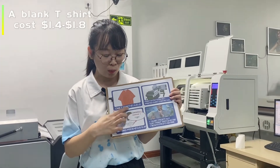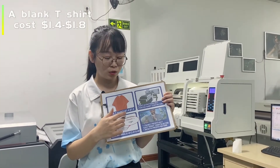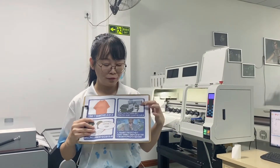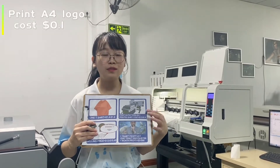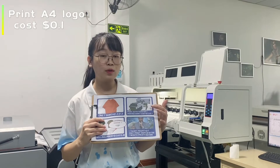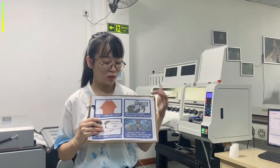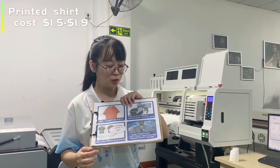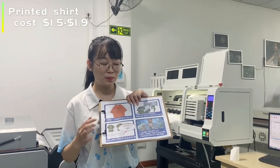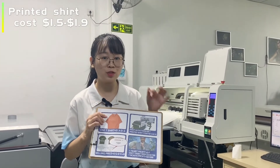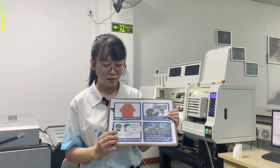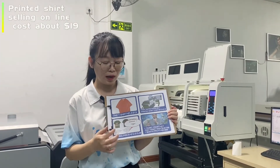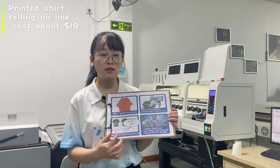For a blank t-shirt, the cost is around 1.4 to 1.8 dollars, and the A4 pattern print is around 0.1 dollars, so the total is around 1.5 to 1.9 dollars per t-shirt after transfer. One t-shirt selling online is around 20 dollars.